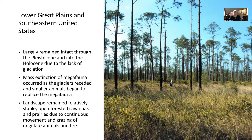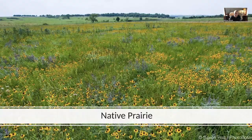This landscape was comprised of open forested savannas and prairies due to continuous movement and grazing of ungulate animals and fire. Historically, the forests of the south would have looked like this — pine trees spread out, not densely planted, with a relatively open prairie underneath. Native prairie would have had tremendous diversity of plants — not just grasses, but forbs and flowering plants.